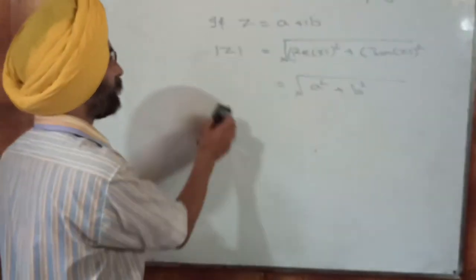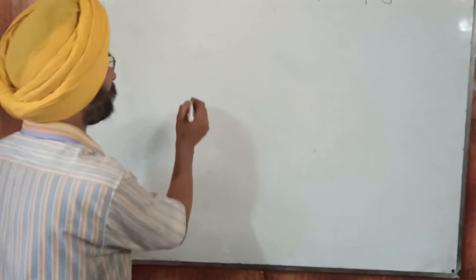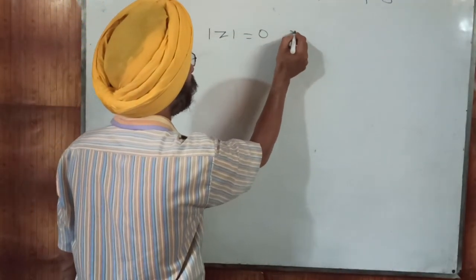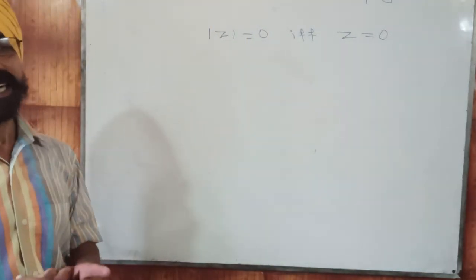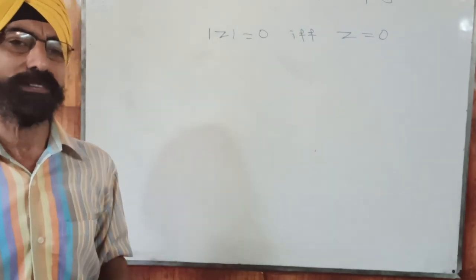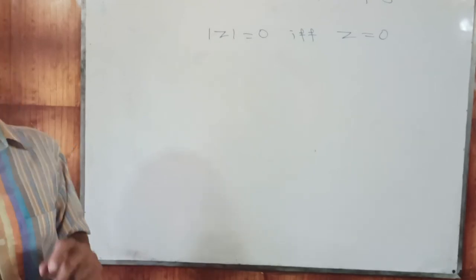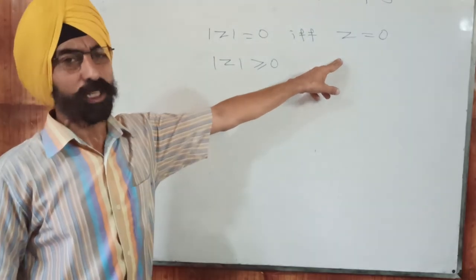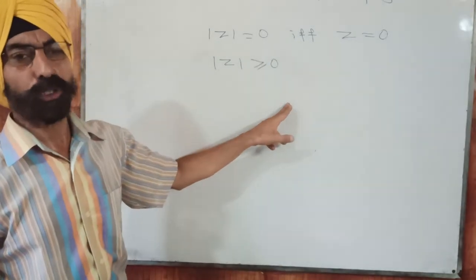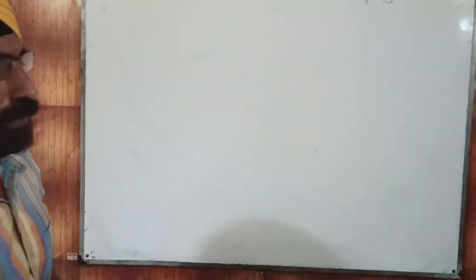Now we will cover more properties of conjugate along with the modulus. The first property is that mod Z equals 0 if and only if Z itself is 0 — meaning both real and imaginary parts are zero. The second property is that mod Z is always greater than or equal to 0, and for a non-zero complex number, mod Z is always strictly positive.